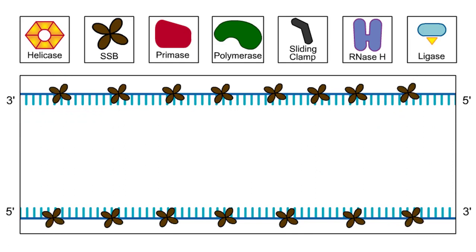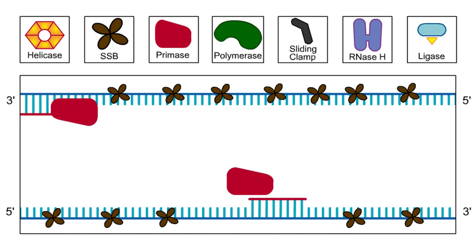The primase enzyme uses the original DNA sequence as a template to synthesize a short RNA primer. Primers are necessary because DNA polymerase can only extend a nucleotide chain, not start one.